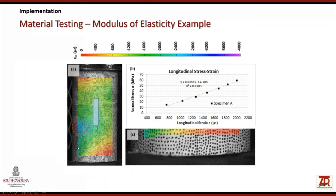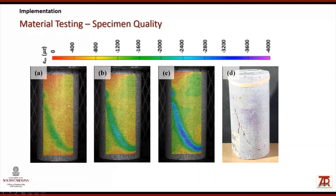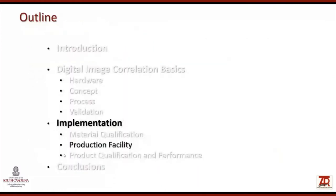Beyond mechanical properties, DIC reveals additional effects such as localized strain concentrations due to imperfect seating or specimen geometry. Furthermore, specimens with internal defects that were not visible on the surface showed a clear weak plane in the DIC data — and this is precisely where the specimen later failed. This demonstrates that DIC can also be used to assess the quality of the specimen before testing.